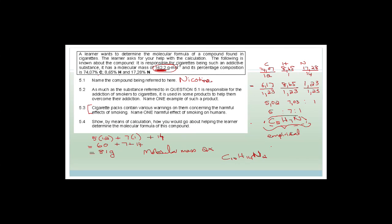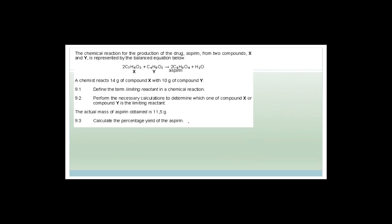Next question. A chemical reaction for the production of aspirin from two compounds X and Y is represented by a balanced equation: X (C₇H₆O₃) + Y (C₄H₆O₃) → aspirin (C₉H₈O₄) + water. The chemist reacts 14 grams of compound X with 10 grams of compound Y. First: define the term limiting reagent.